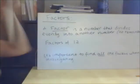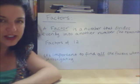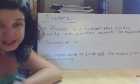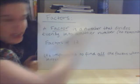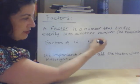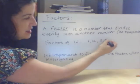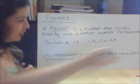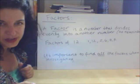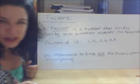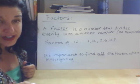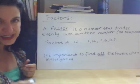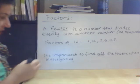Let's look at factors. A factor is a number that divides evenly into another number, so with no remainder. So for example, if we look at 12, we've got obviously 1 and 12, but also 2, 6, 3, and 4. They are all factors of 12 because all of those numbers can divide evenly into 12. It's important when you're doing an investigation to really look and make sure that you're finding all the factors.